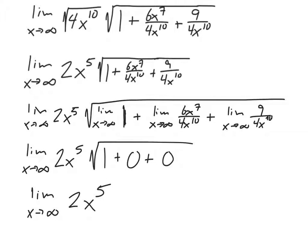Then we figure out what that limit is. This is the limit of a polynomial with degree 5, which has end behavior of going down then up. Since we're looking at positive infinity, the limit equals infinity because it's going up as we go to the right.